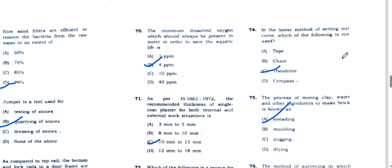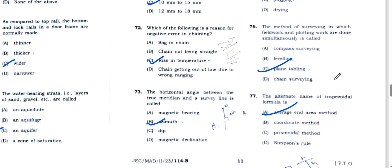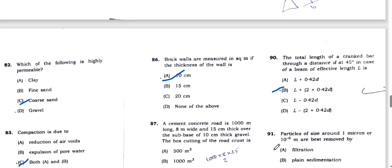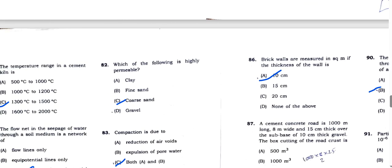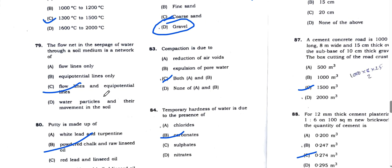Single coat plaster for both internal and external work: internal work 10mm, external work 15mm. Question 72, the horizontal angle between meridian and survey line is called azimuth. Question 74, the linear method of setting out the curve: theodolite, option D.